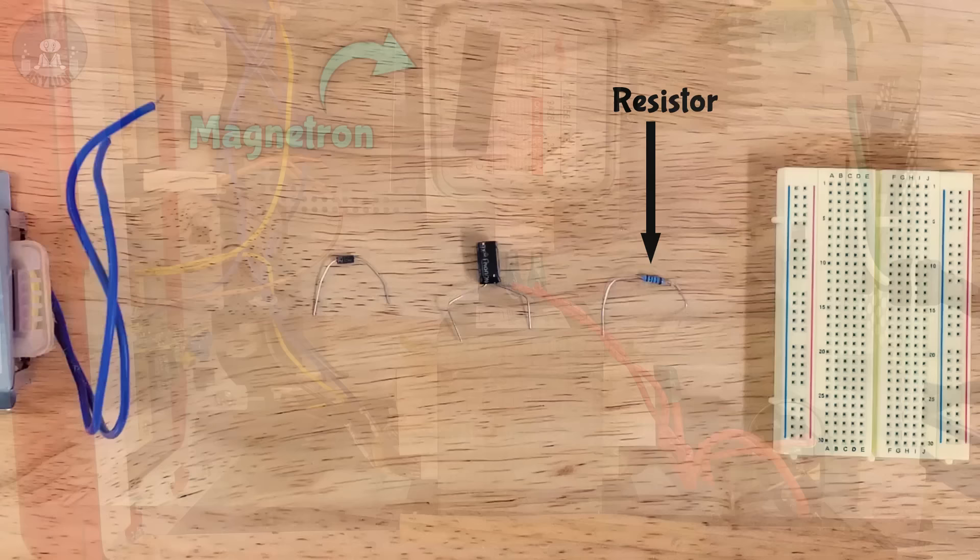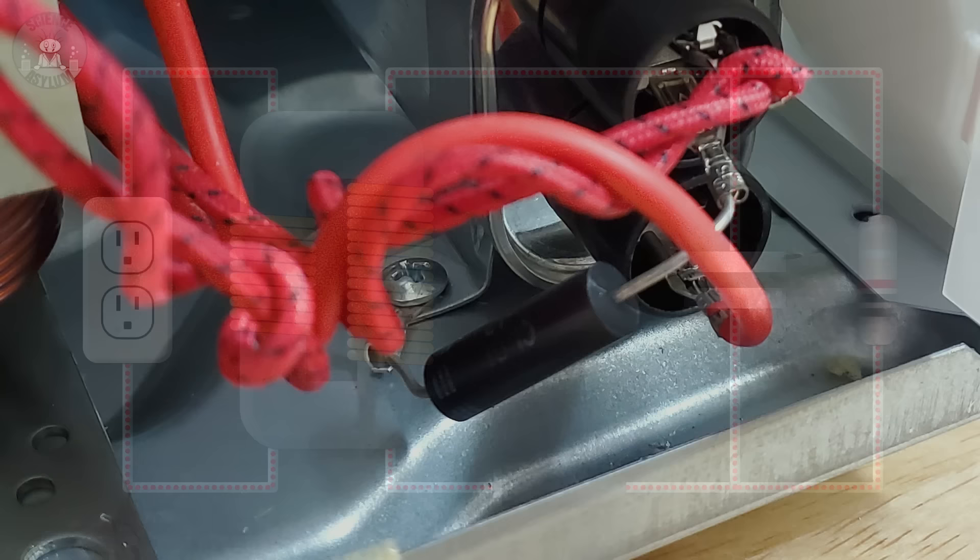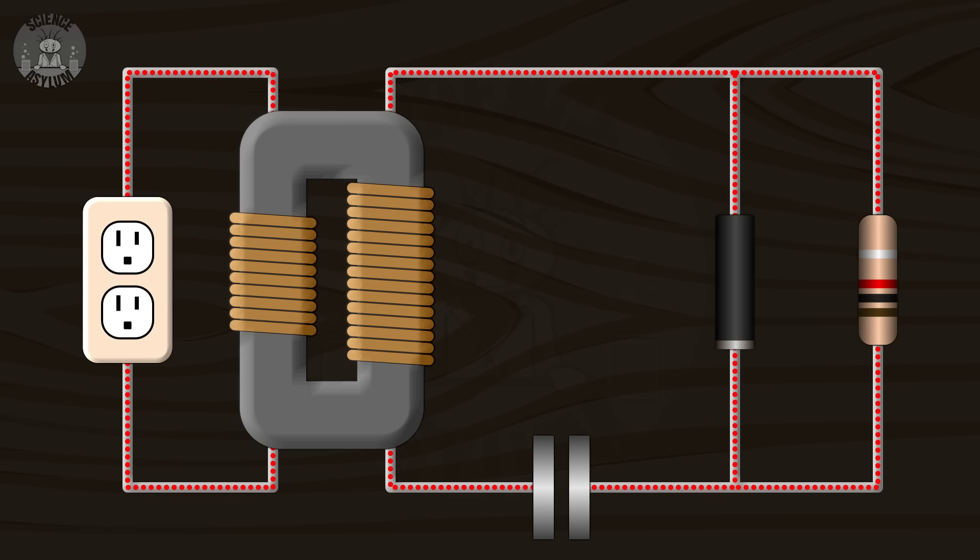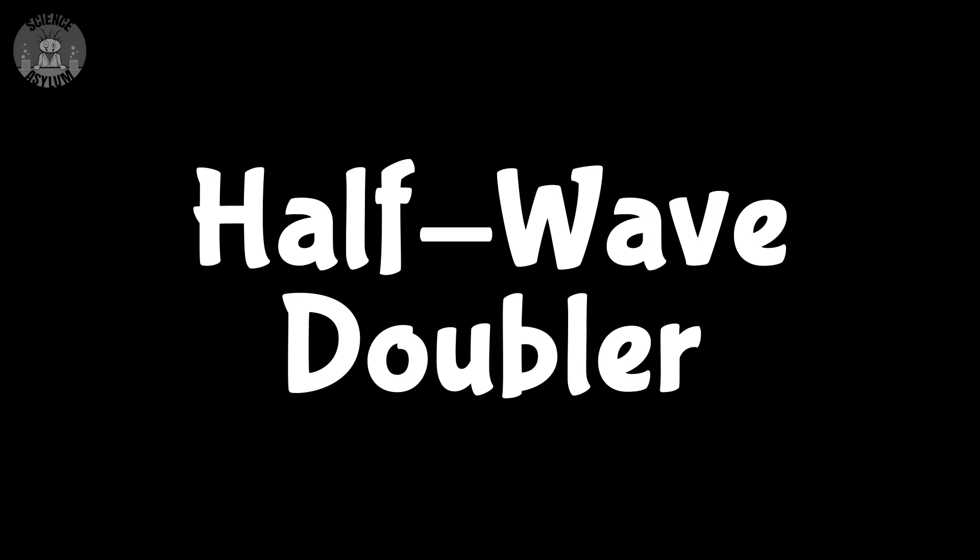This resistor represents the load, the actual device you're trying to power. In a microwave oven? That's a magnetron. But if you look close enough, you'll notice something interesting. The magnetron isn't connected across the capacitor. It's connected across the diode. Rather than the capacitor making up for missing energy on the off cycle, it adds extra energy during the on cycle. This isn't being used as a half-wave rectifier. It's what we call a half-wave doubler.